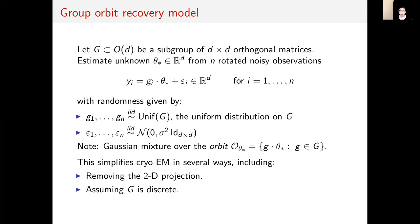To address these issues we abstract the problem into the group orbit recovery model. Let G ⊂ O(d) be a subgroup of d by d orthogonal matrices where for cryo-EM we take G equals SO(3). We're trying to estimate an unknown signal θ* in R^d from n rotated noisy observations y_i = g_i · θ* + ε_i in R^d for i = 1,...,n with randomness given by g_1,...,g_n drawn uniformly from the group G, and ε_1,...,ε_n drawn from N(0, σ²I_{d×d}). This creates a Gaussian mixture over the orbit O_{θ*} = {g · θ* : g ∈ G}.